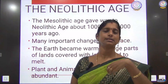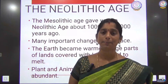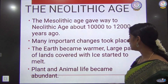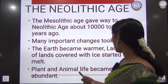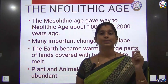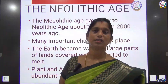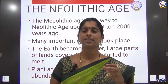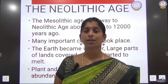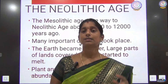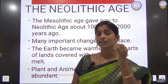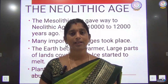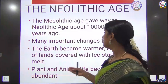A drastic change in the lifestyle of people came. The earth became warmer, and large parts of land covered with ice started to melt, and plant and animal life became abundant. These two are very big changes in the Neolithic age. We have already seen in the Mesolithic age that the temperature started to go up and glaciers — that is the surface of ice — started to melt and water levels were increasing.